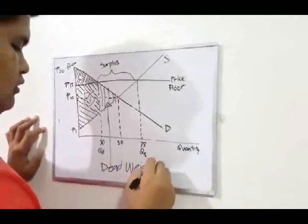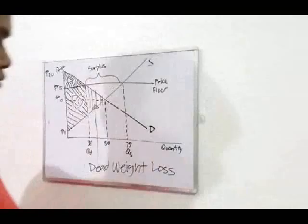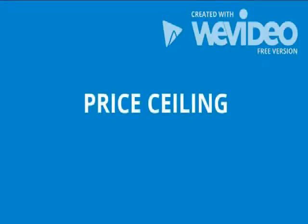The price ceiling occurs when the government puts a legal limit on how high the price of a product can be. In order for a price ceiling to be effective, it must be set below the natural market equilibrium. When a price ceiling is set, a shortage occurs. At the price the ceiling is set, there is more demand than there is at the equilibrium price, and also less supply than there is at the equilibrium price. Thus, there is more quantity demanded than quantity supplied. An inefficiency occurs since at the price ceiling quantity supplied, the marginal benefit exceeds the marginal cost. The inefficiency is equal to the dead weight welfare loss.